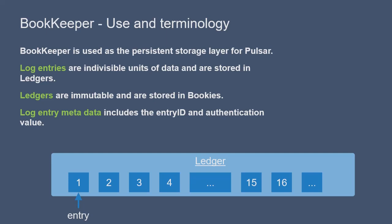In addition to message data, the subscription positions for individual consumers are also persistently stored in Bookkeeper. These subscription positions for consumers are referred to as cursors. These cursors are stored in ledgers, making tracking scalable.